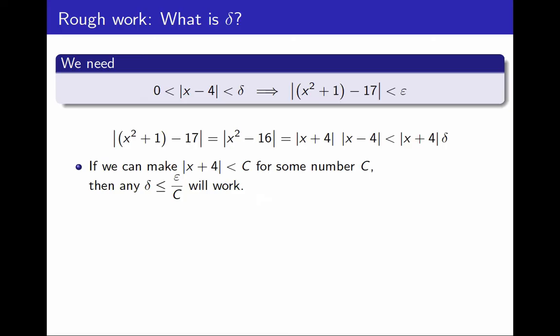Is this reasonable? Yes, it is. Since δ is small, x is going to be close to 4. And if x is close to 4, the absolute value of x plus 4 cannot be arbitrarily large. So yeah, I'm pretty sure it's going to be smaller than 100, but I have to prove it.